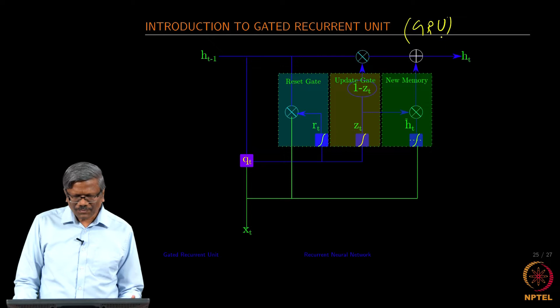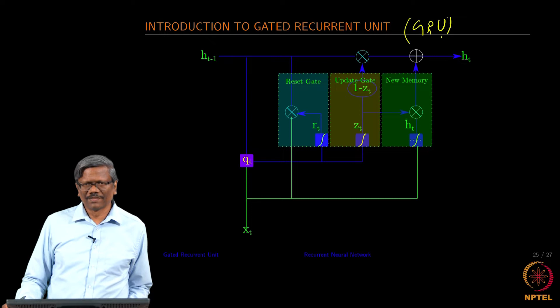One is the reset gate, second one is the update gate, and then you would also notice that there is no memory cell that is passing through this.